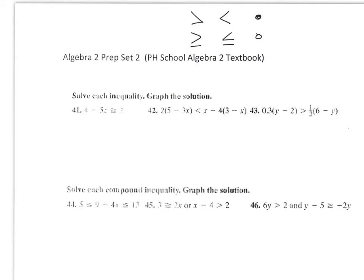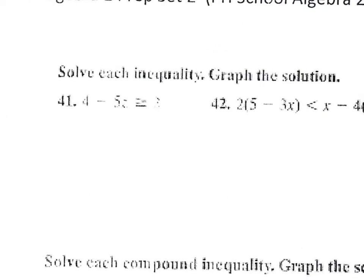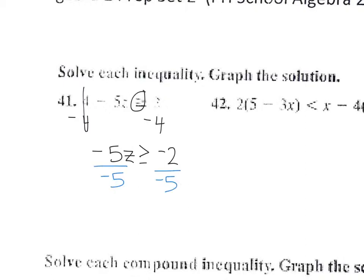If you solve for z, you subtract 4 from each side — that cancels out. You'll have negative 5z greater than or equal to negative 2. To solve, divide both sides by negative 5. When you divide by a negative, the greater than or equal to changes to a less than or equal to, and you have 2/5. So when graphing, it's a closed dot at 2/5, and all numbers less than 2/5 are shaded going left.